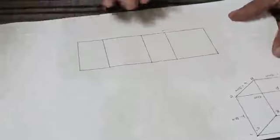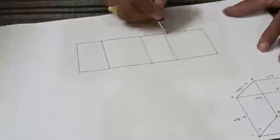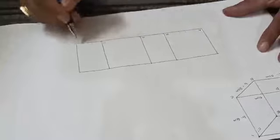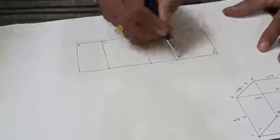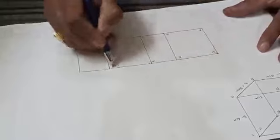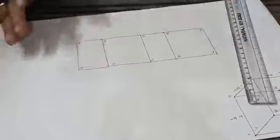So now name it A, B, D, C, D and A. A dash, D dash, C dash, D dash and A dash. Now we have completed the 4 faces.